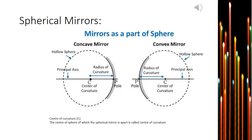With a simple diagram, you come to know how mirrors are part of a sphere. The first sphere shows the concave mirror, where the reflecting surface is curved inward. The second mirror is a convex mirror, where the reflecting surface is curved outward. There are also specific terms related to these mirrors that we will now discuss.